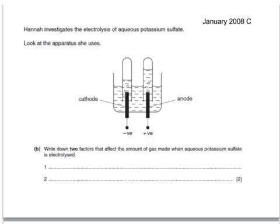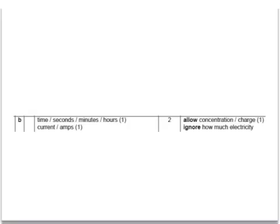Here's a past paper question. Hannah investigates the electrolysis of aqueous potassium sulfate. Write down two factors that affect the amount of gas made when aqueous potassium sulfate is electrolyzed. The amount of gas produced would double if, for example, you doubled the current or doubled the time. So the two factors which affect the amount of gas produced are the current and the time — and those are the allowable answers on the mark scheme.